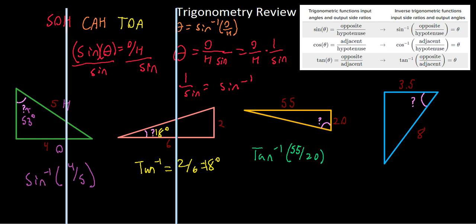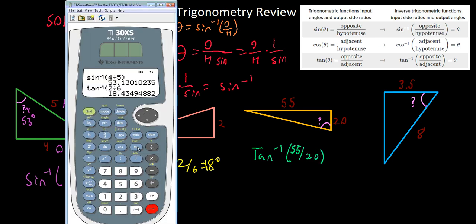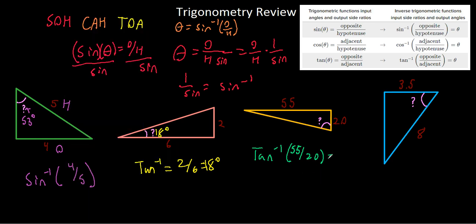So we type that into our handy-dandy calculator. We'll do it again. To get the inverse tangent, we'll hit second tangent, and we'll do 55 over 20. What do we get? We get about 70 degrees. So this down here is 70 degrees.